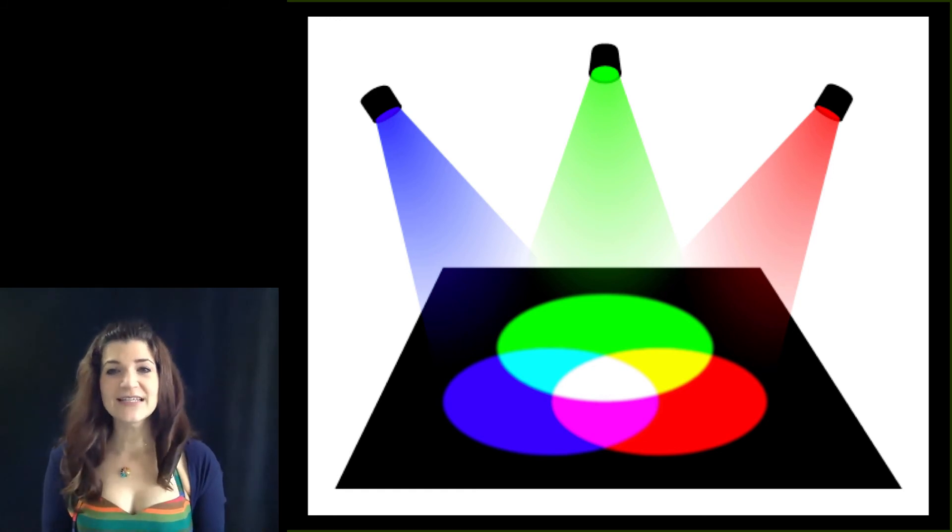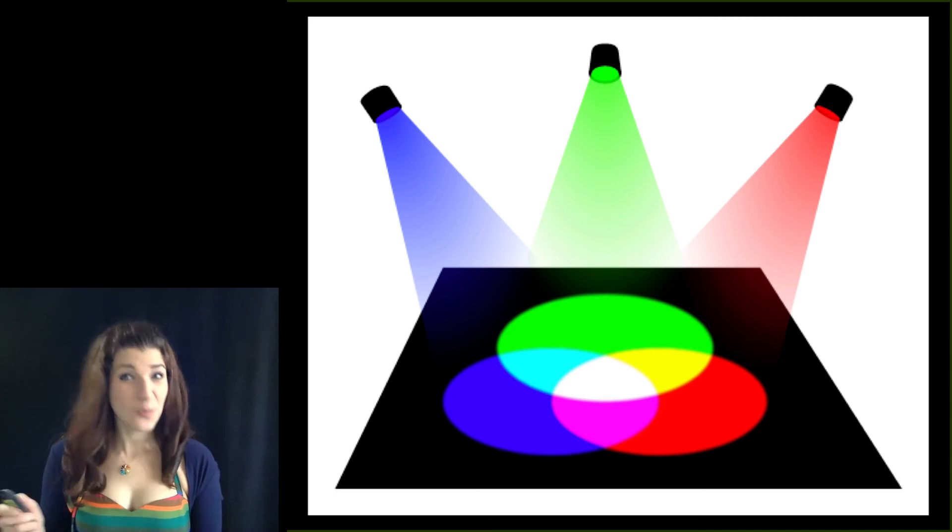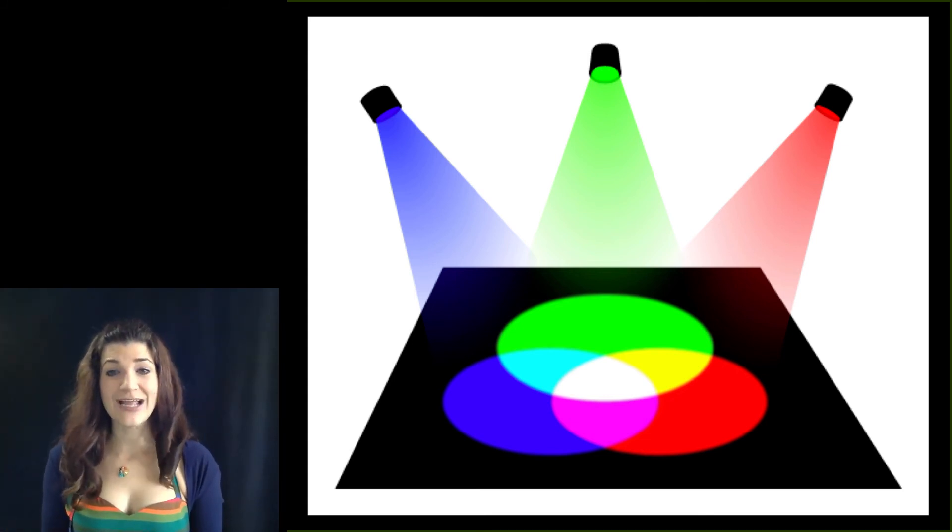The answer lies in the fact that it's possible to generate every color on the visible spectrum as well as many off the visible spectrum using only those three colors. So by turning up or down the brightness or intensity of each of those colors, we can recreate any others.